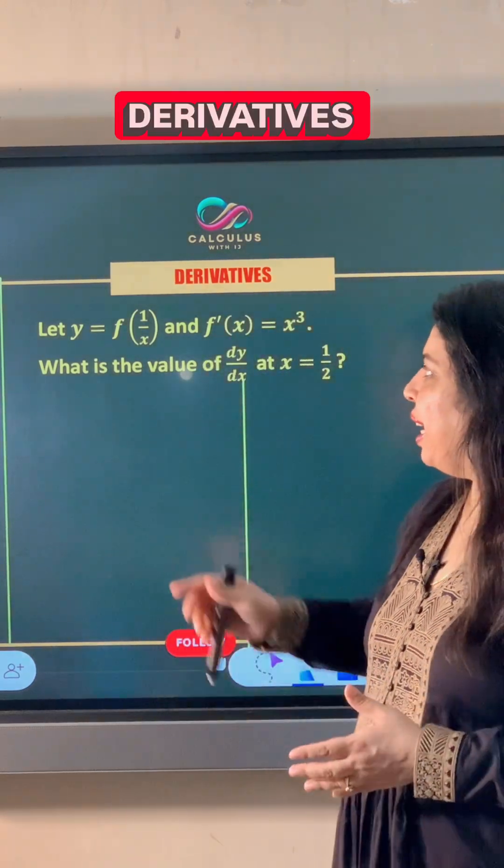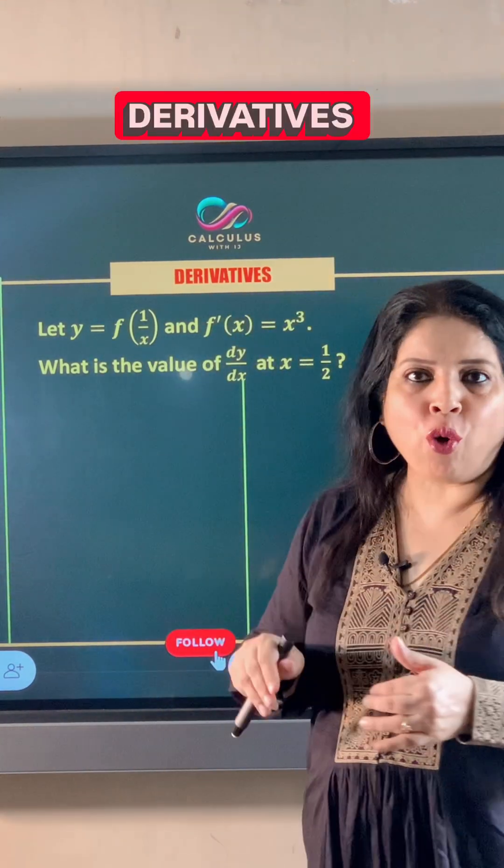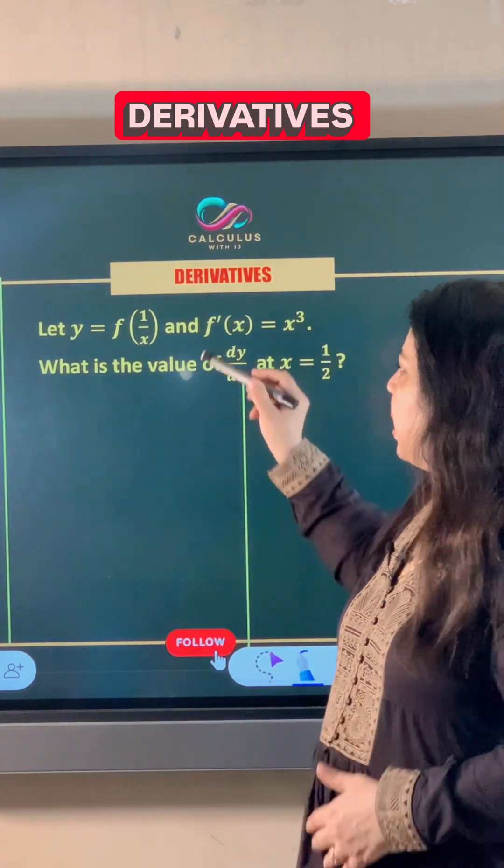In this derivatives question, it is given that y equals f of 1 upon x, and f dash x is x cubed.